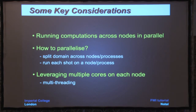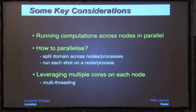We're likely to be running these computations in parallel — across several nodes, maybe hundreds, maybe even thousands. Crudely speaking, there are two methods: we can split the computational domain across the nodes, or we can run each shot on a separate node or process. Running each shot per node is probably the easiest to code, especially in the time domain. In the frequency domain, with large matrices to solve, you might want domain decomposition. Also, on each node we have multiple cores — often around 20 these days — so we want our code to be multi-threaded on these clusters.